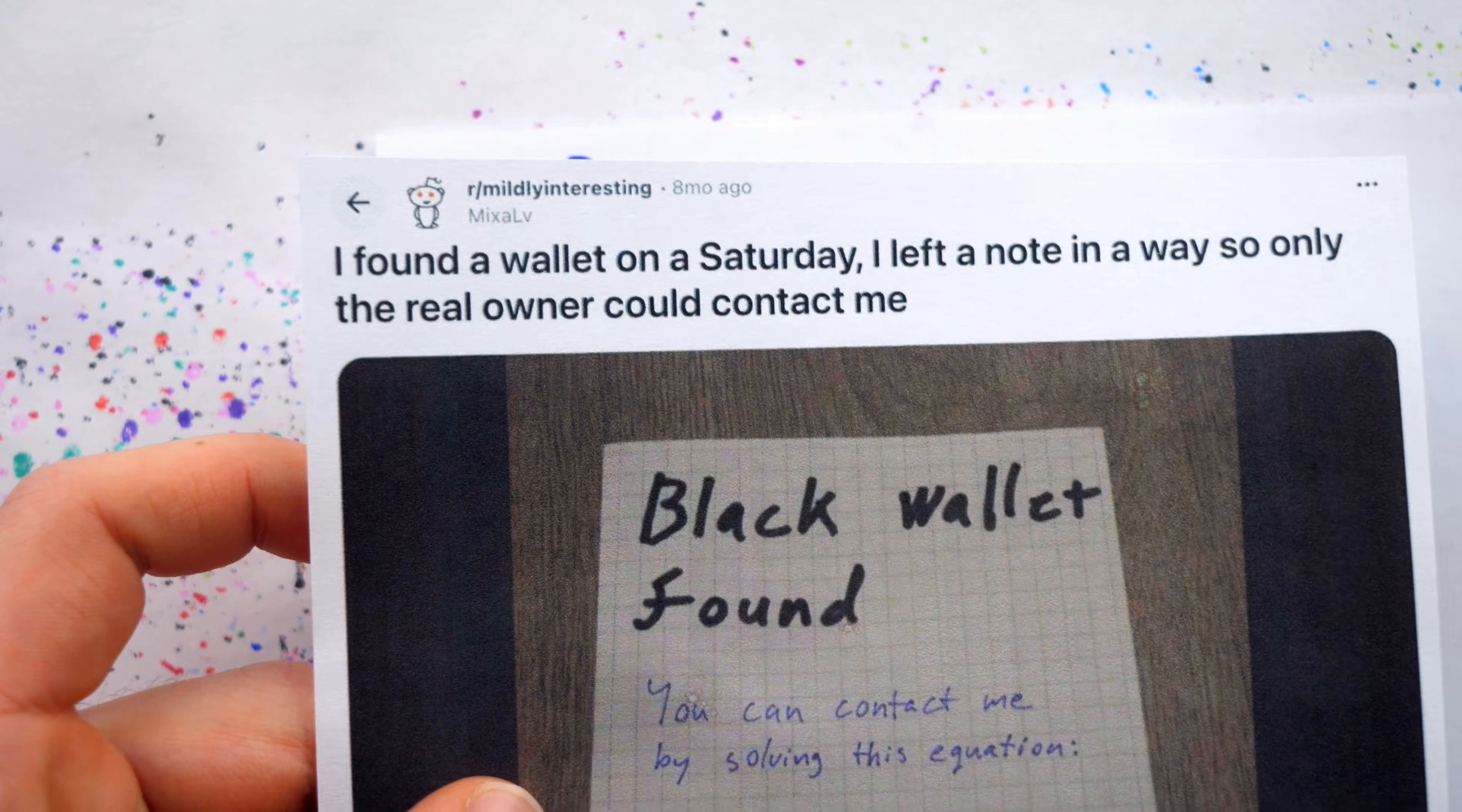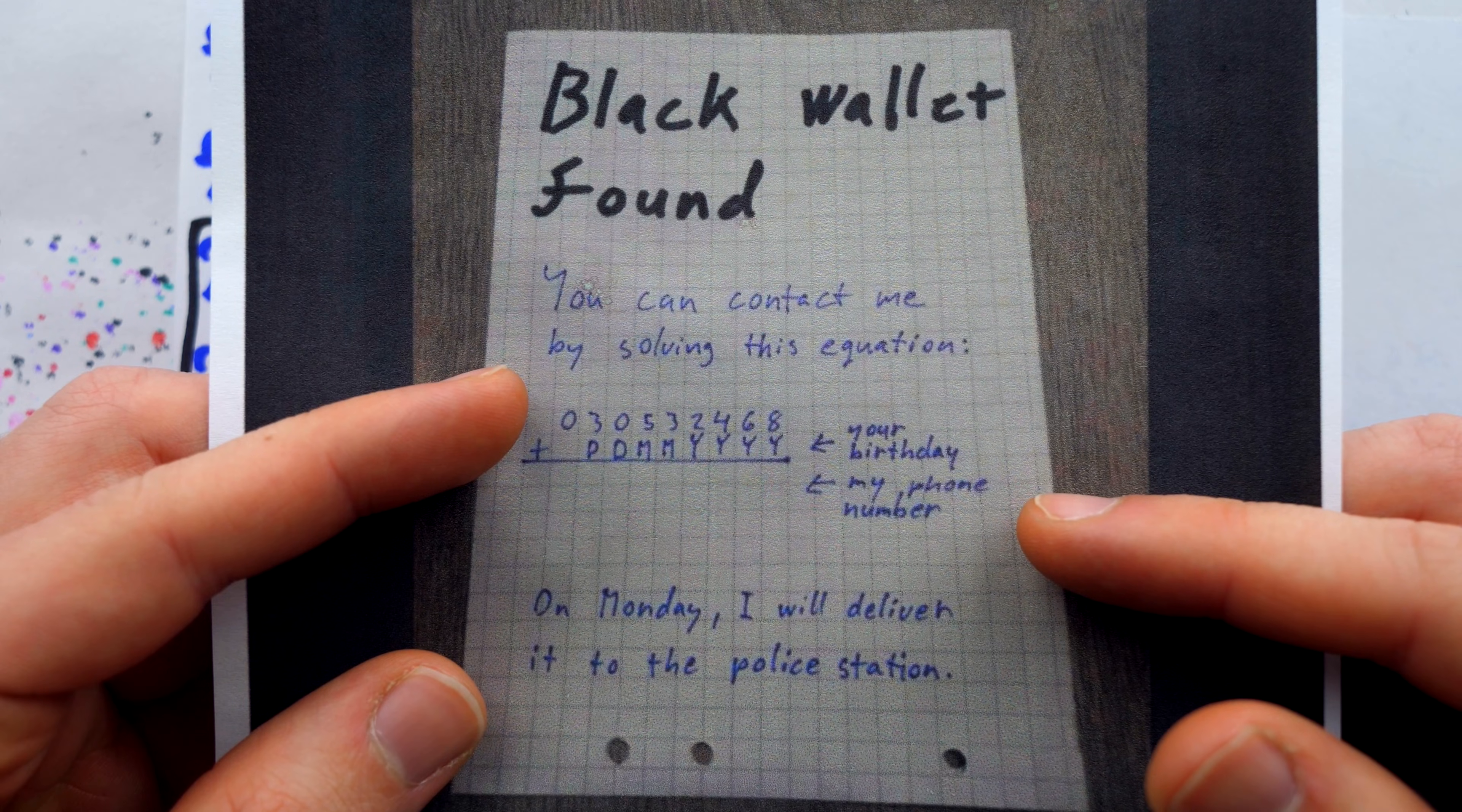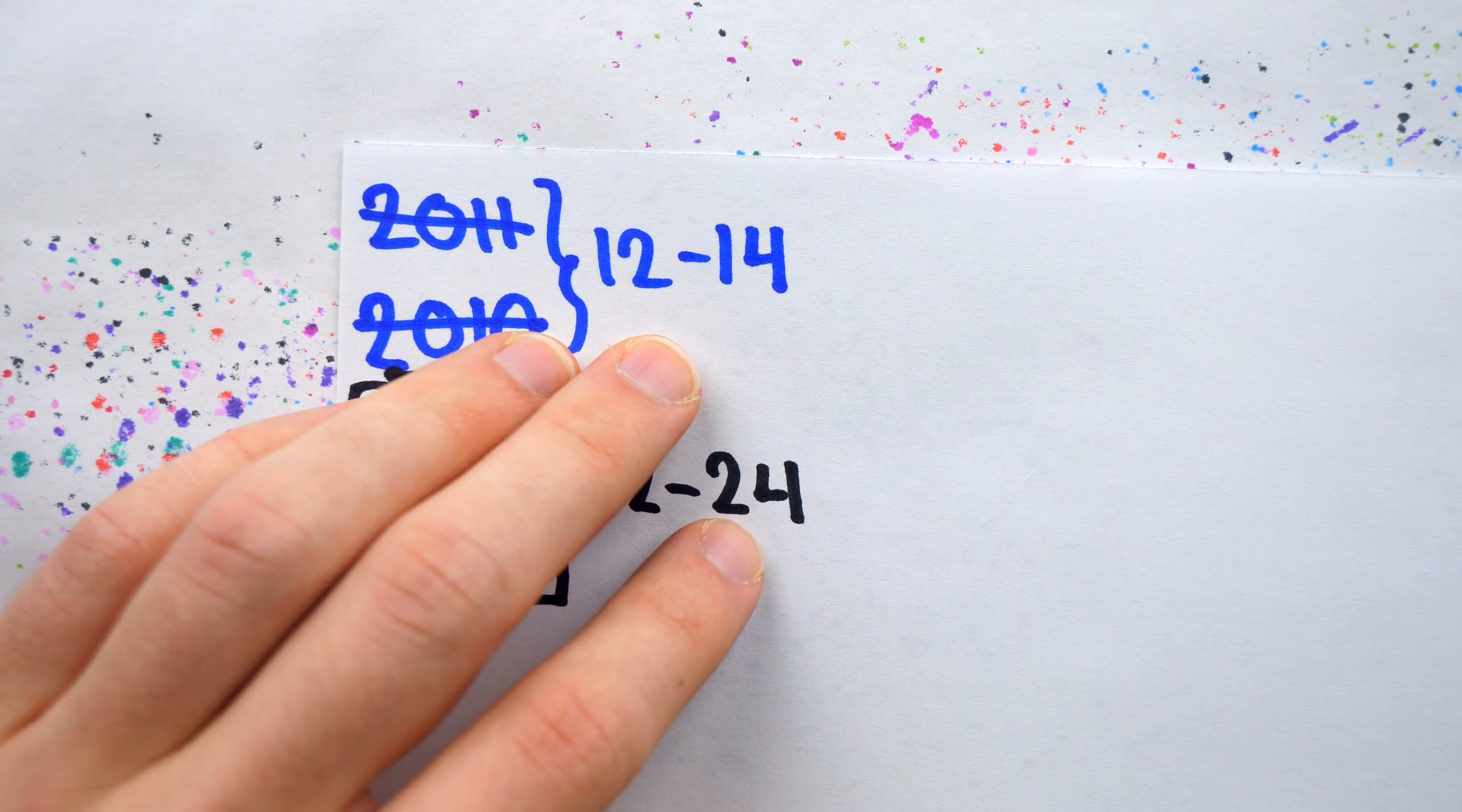Additionally, if OP opened up the wallet and found that it belonged to a 12 or 13-year-old, I don't think they'd have left a note inviting a minor to contact them to arrange a meeting. In that situation, you'd want to call up Skeet, Jideon, or Gordon Flowers instead of the math guy.